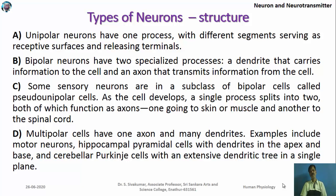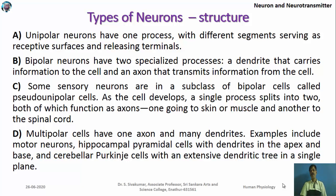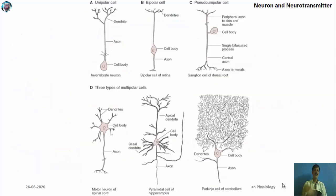Depending upon structure, neurons are classified as unipolar (one process), bipolar (two specialized processes — a dendrite carrying information to the cell and an axon transferring information from it), and pseudo-unipolar, where a single process splits into two during development, appearing bipolar but classified separately. Multipolar neurons have many extensive processes and are found in motor neurons, hippocampal pyramidal cells, dendritic cells, and cerebellar Purkinje cells.